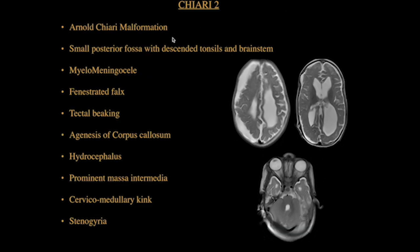Chiari 2 malformation is also called Arnold-Chiari malformation. Small posterior fossa with descent of cerebellar tonsils and brainstem along with myelomeningocele or meningocele is considered characteristic. Other features include fenestrated falx, interdigitations, tectal beaking, dysgenesis or agenesis of the corpus callosum, hydrocephalus, prominent massa intermedia, and crowding of posterior fossa structures.